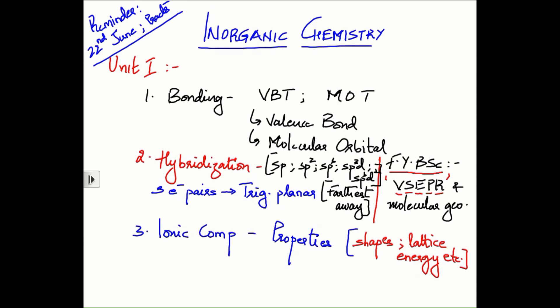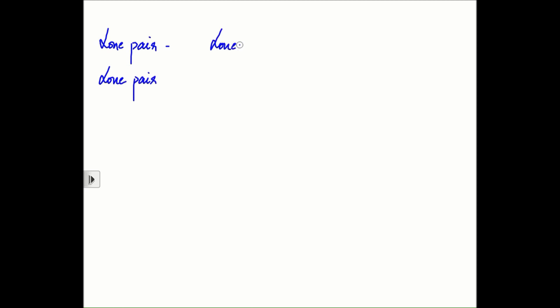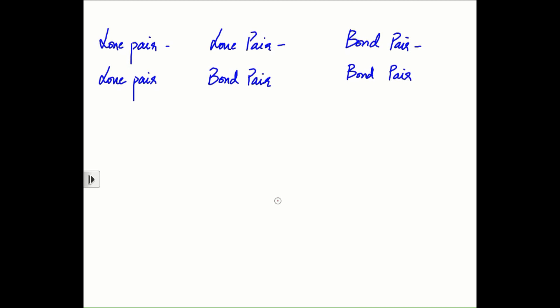How can valence shell electron pair repulsion theory be summed up in just one line? This is the essence of VSEPR: lone pairs will repel one another to a greater extent compared to bond pairs. The repulsion between two lone pairs is greater than between a lone pair and a bond pair, and lone pair–bond pair repulsion is greater than bond pair–bond pair repulsion. Therefore two bond pairs can be pushed closer together at the expense of giving the lone pair more space.